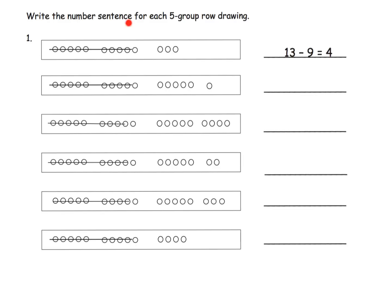What we're being asked to do here is look at the picture and write the number sentence for it. Let's take a look at this one: we've got 5, 10, 15 plus 1 is 16, so we've got 16. It looks like we're subtracting 9, so our number sentence is going to be 16 minus 9. We've got the 6 plus the 1, which is 7, so 16 minus 9 equals 7.